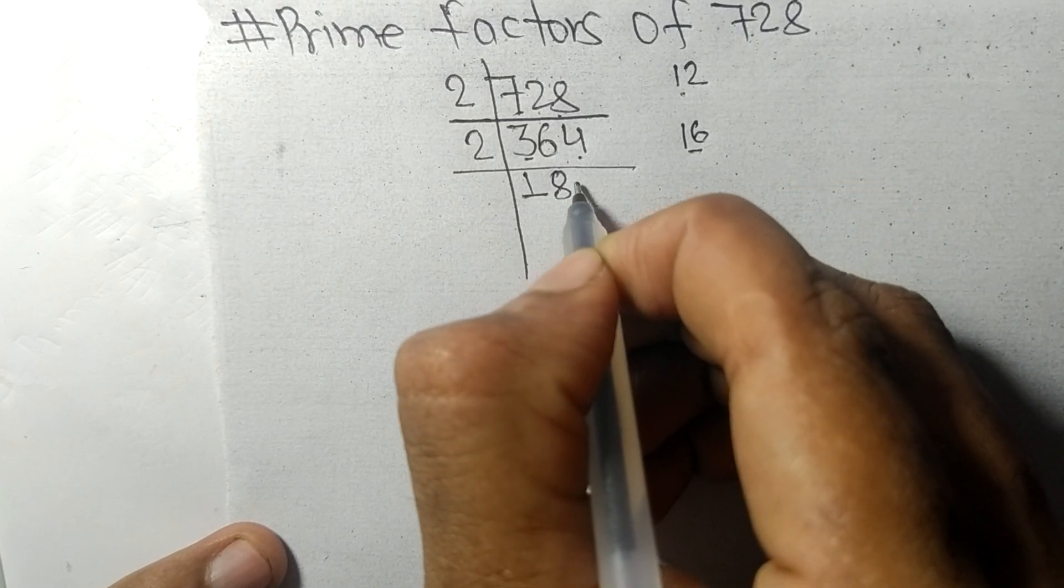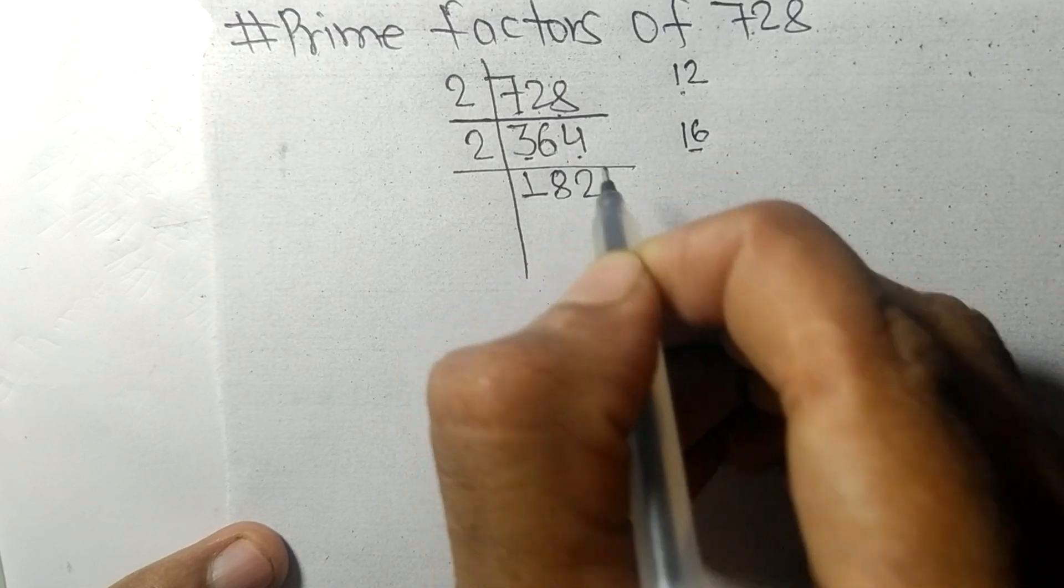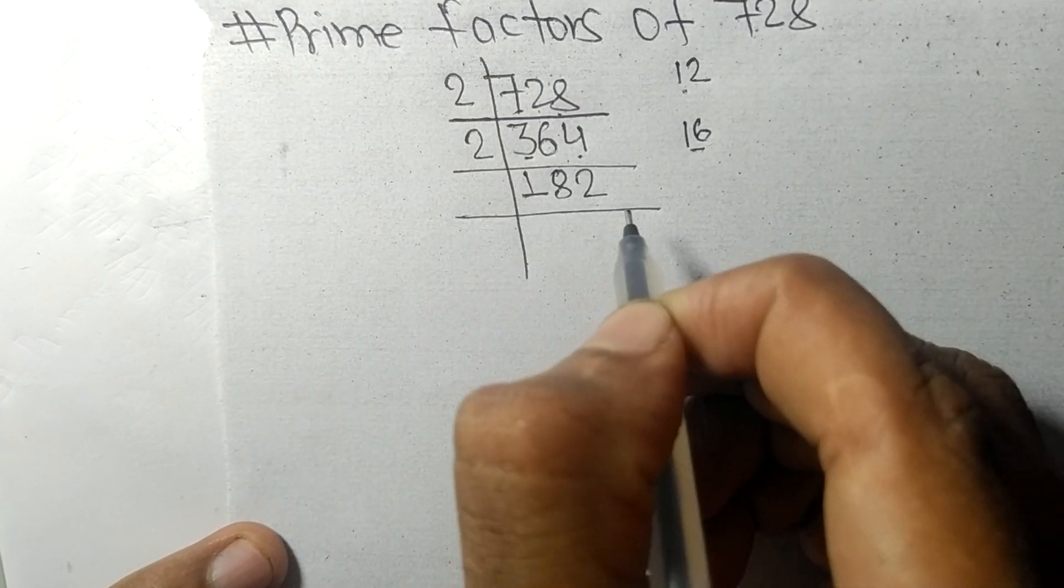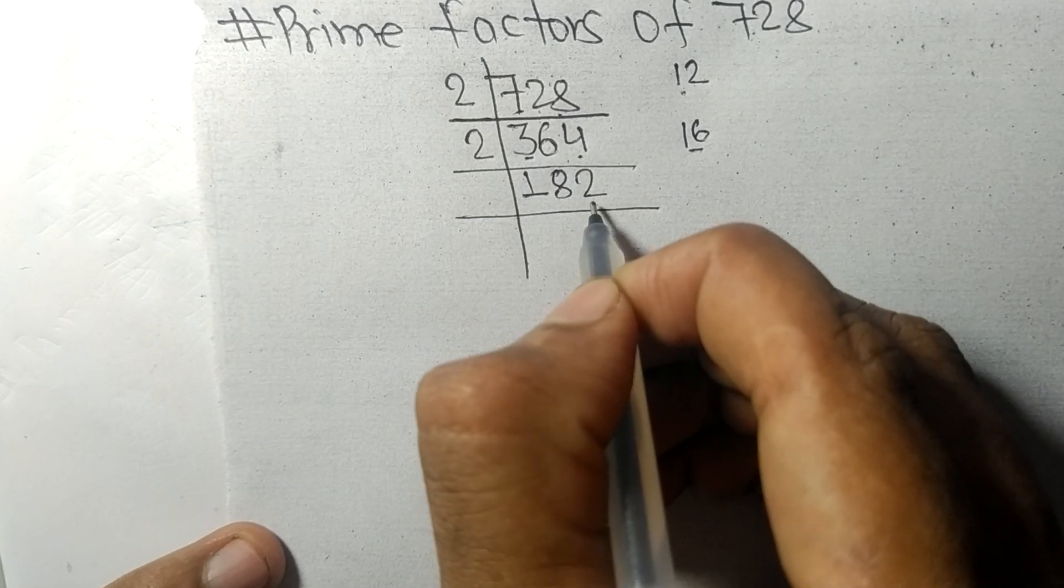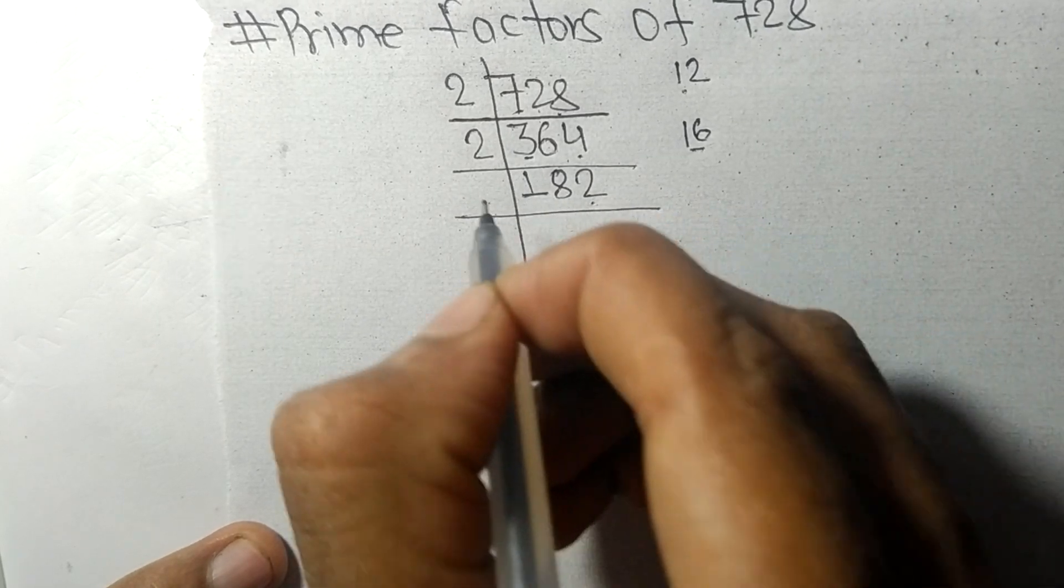Again it has even number 2 at last, so it is divisible by 2. 2 times 1 is 2.